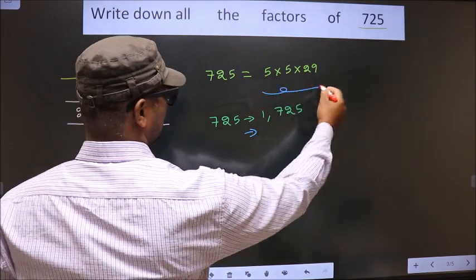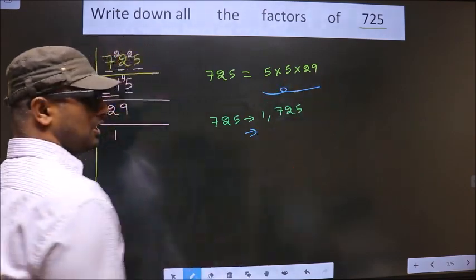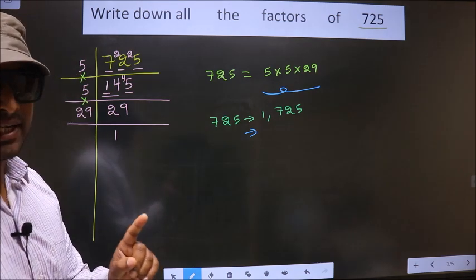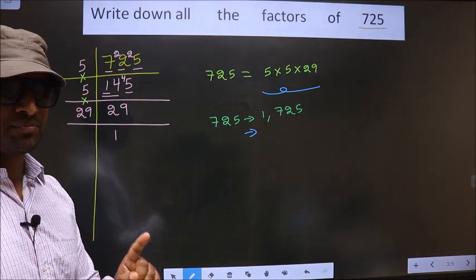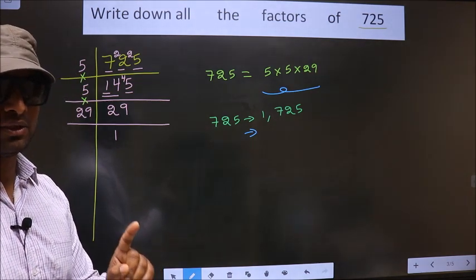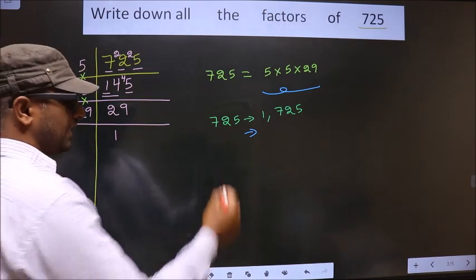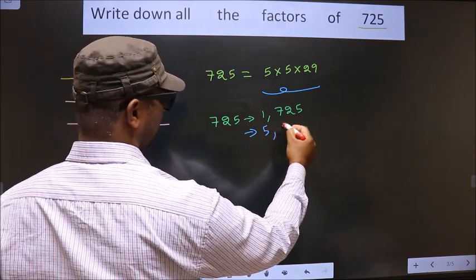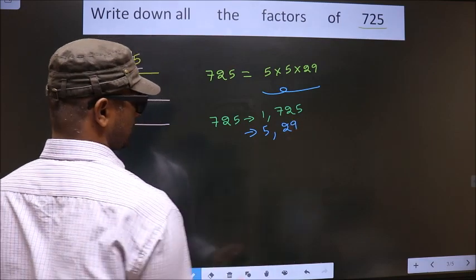Now, from these numbers, you select one different number at a time. Like that, how many numbers do we get? We get 5 and 29. That's it.